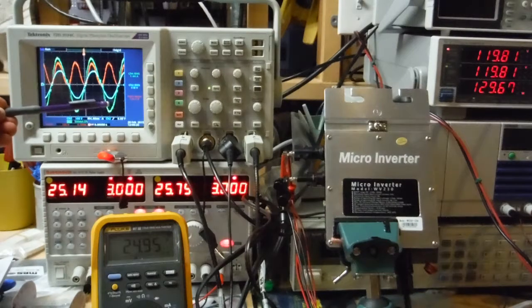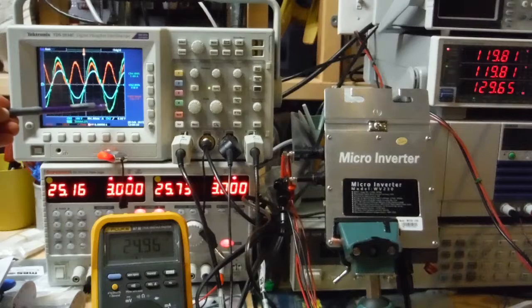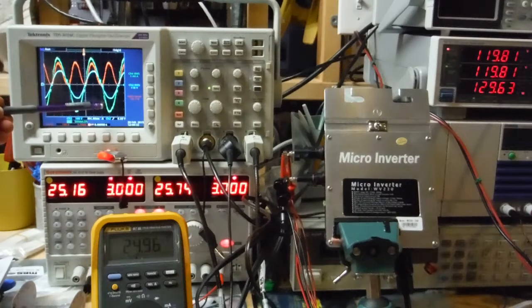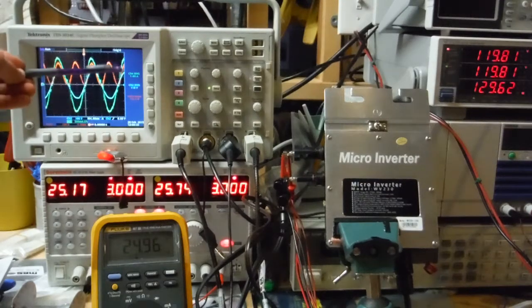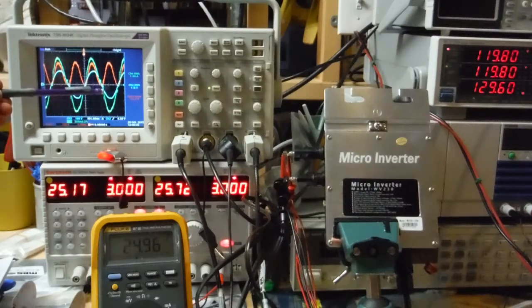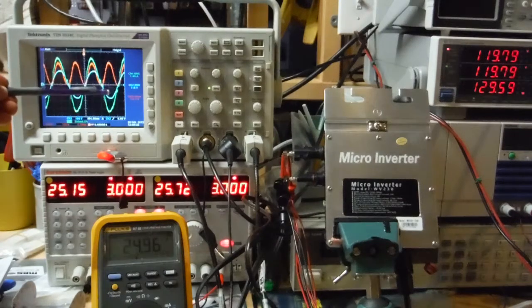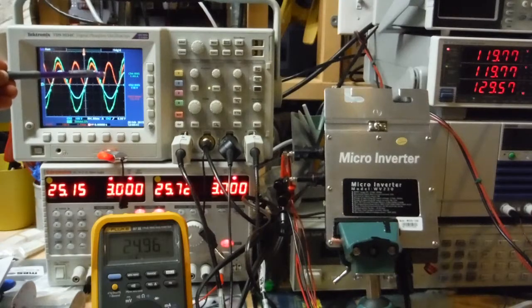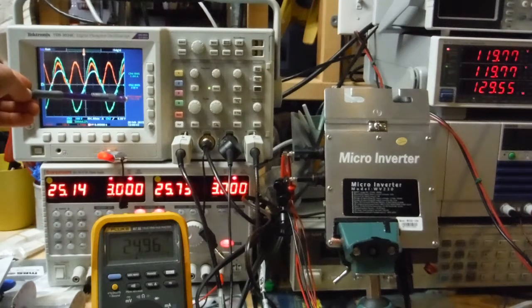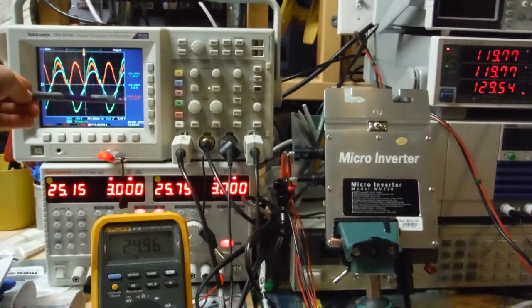The output waveforms. The green is the current, which is pretty close to a sinusoid. There's a little bit of high-frequency noise on that from the switching. Blue is the output voltage. And then red is a math on the power, which is 127 watts.